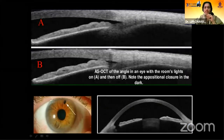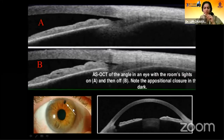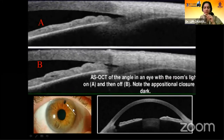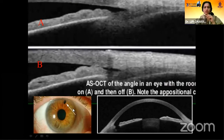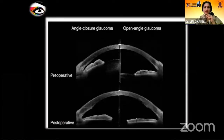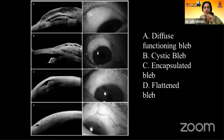Anterior segment OCT is mainly used to feature the angle anatomy. This has helped in understanding the use of early cataract surgery in narrow angle glaucomas. A rather recent use of OCT has been in morphology of bleb, which helps to manage impending bleb failure.